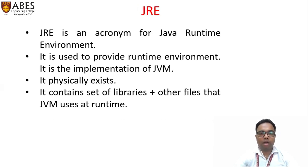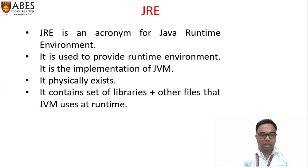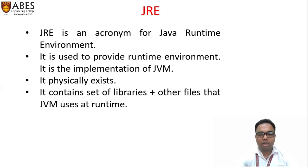Next, we have Java Runtime Environment. It is basically used to provide the environment on which a particular application runs, and it physically exists. It contains a set of libraries and other files required by the JVM at runtime. So these three — JDK, JRE, and JVM — are what you get when you install Java on your particular operating system.